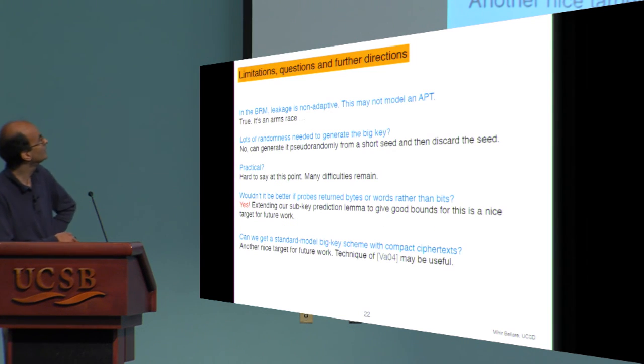So to conclude, some of the limitations of this work include that in this bounded retrieval model, the leakage is upfront. It's not adaptive. It's computed before encryption begins and before the key is chosen, which is certainly a weakness. One thing a lot of people ask is, wouldn't it take a lot of randomness to generate the big key. You can do it from a short seed and then discard the seed. We certainly had as a goal to investigate how practical this might be as an actual defense. We don't think we're really there. There are lots of issues including the model, the key distribution, and other things which say that perhaps this has some scope in practice, but it's not a solution at this point.